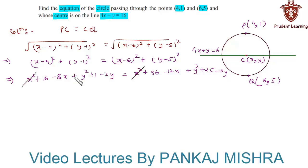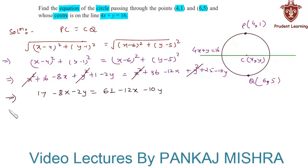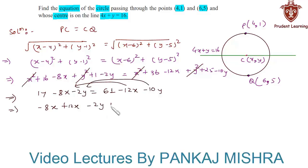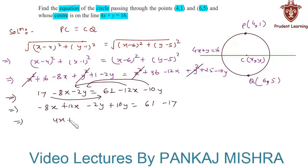We can cancel x² and y² on both sides, giving 16 plus 1, which is 17, minus 8x minus 2y equals 36 plus 25, which is 61, minus 12x minus 10y. Rearranging, minus 8x plus 12x gives 4x, and minus 2y plus 10y gives 8y, equals 61 minus 17, which is 44.